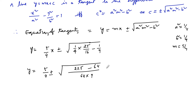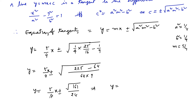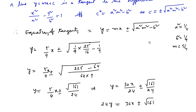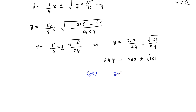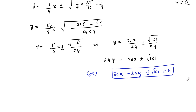The denominator is √(64 × 9) = √576 = 24. So y = (5/4)x ± √161/24, which gives 24y = 30x ± √161, or equivalently 30x − 24y ± √161 = 0. These are the equations of the tangents.